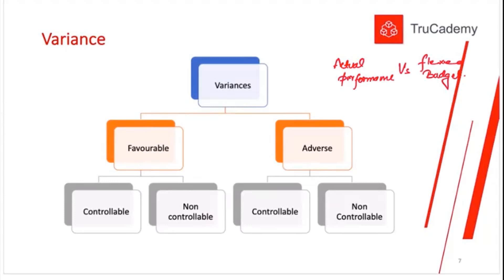Whenever we talk about variances, variances can be of two types: favorable variance and adverse variance. A favorable variance is of course a good variance, and an adverse variance is a bad variance.